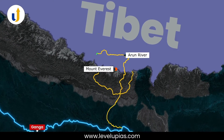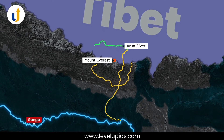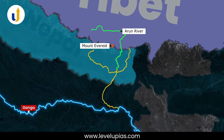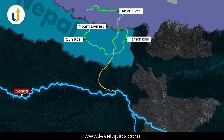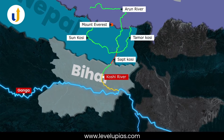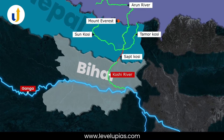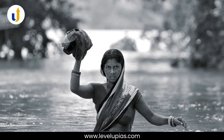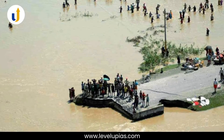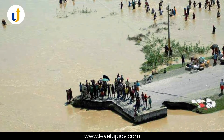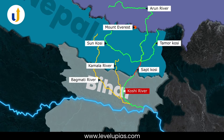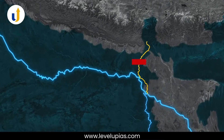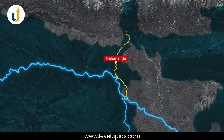After crossing the central Himalayas in Nepal, the Kosi is joined by the Sun Kosi from the west and the Tamur Kosi from the east. It forms the Sapt Kosi after uniting with the river Arun. Its unstable nature has been attributed to the heavy silt it carries during the monsoon season, due to which it is also termed the Sorrow of Bihar. Its important tributaries are Kamla, Bagmati, and Mahananda.